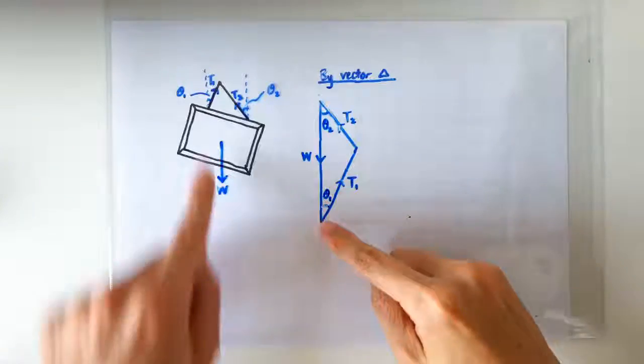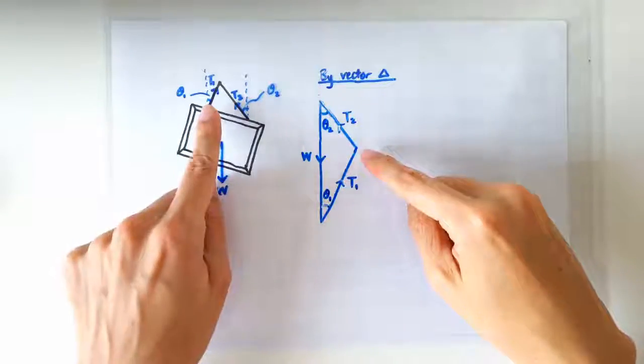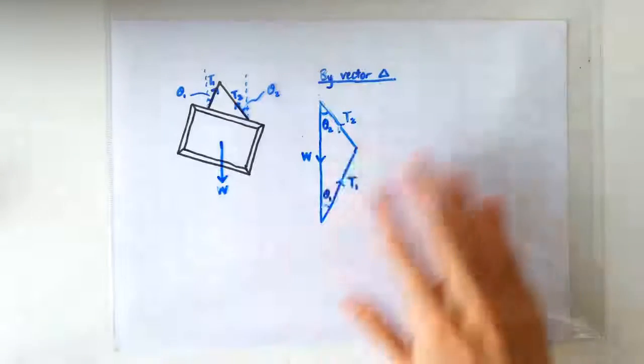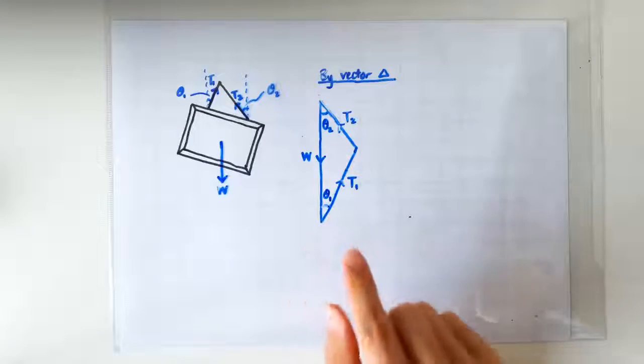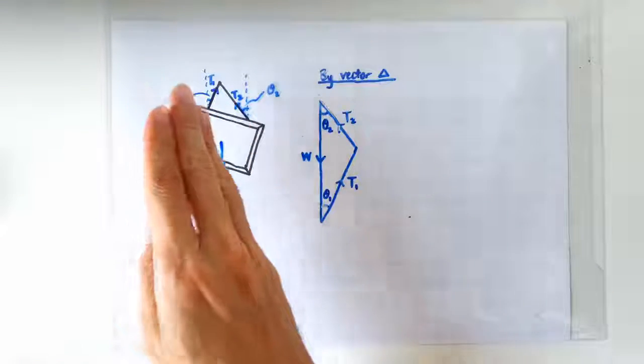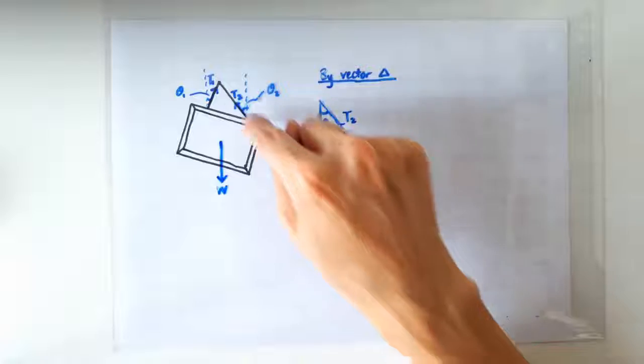So W, the weight, plus T1 plus T2 equals to zero. So just by a sketch of the vector triangle, we can already tell that the tension in the left section of the string is stronger than the tension in this section of the string.